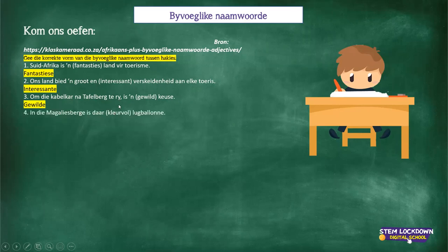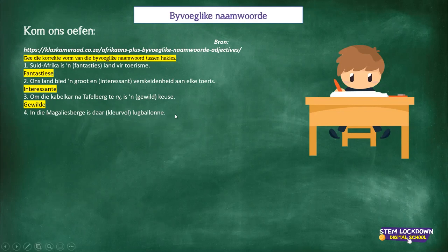'In die Magaliesberge is daar kleurvolle balonne, ligte ballonne.' Ends on a short vowel followed by a consonant — what is going to happen there? Charlton, what do you say? Thank you, Tabile. It will be 'kleurvol' — you see there, double consonant, and it gets an e. Well done.